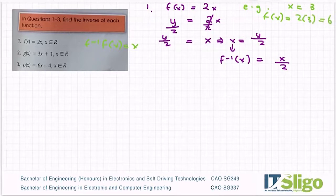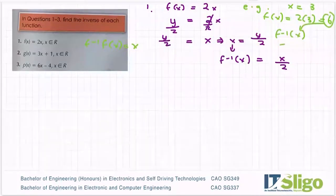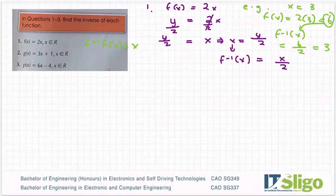Then can I get back to my original 3 using f inverse of x? Let's feed the 6 in for my x. And it's x over 2, so it's 6 over 2, which is indeed equal to 3. So you always get back to your original value when you do f inverse of f of x.